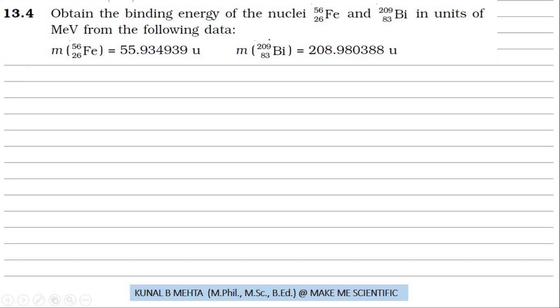In this problem, I am going to find out the binding energy of iron and bismuth nuclei. I am going to divide this problem into two parts. First of all, I am going to find out the binding energy of iron.